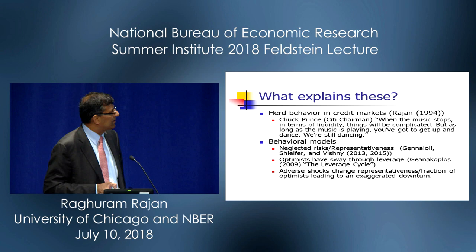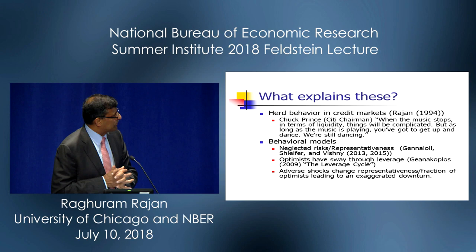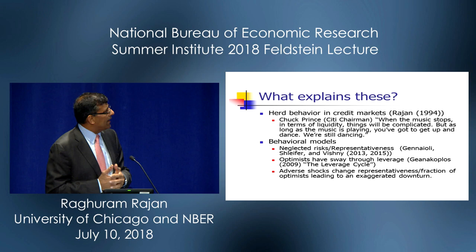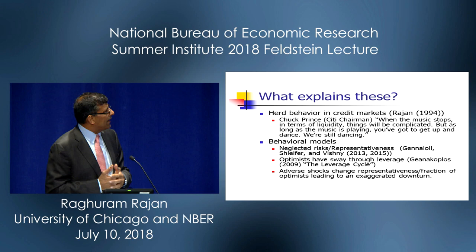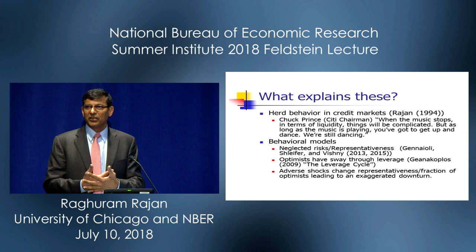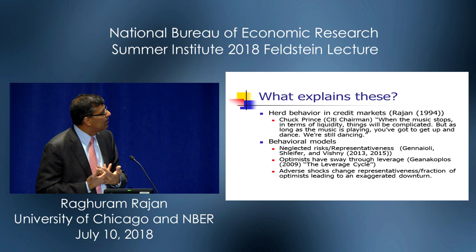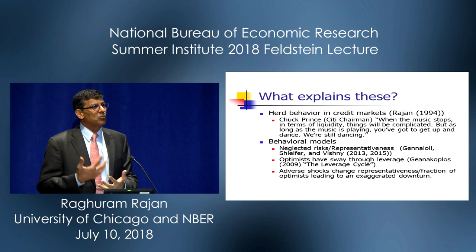There are two sets of behavioral explanations. One is the agency behavioral. The classic example of agency behavioral herd behavior in banking markets is perhaps the most famous statement made before the crisis, which was by Chuck Prince, the chairman of Citibank, who essentially said for the FT: when the music stops in terms of liquidity, things will get complicated. But as long as the music's playing, you've got to get up and dance. And we're still dancing. To many, that was the classic statement about herd behavior.